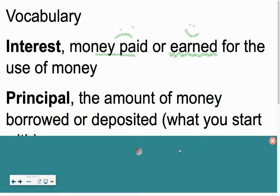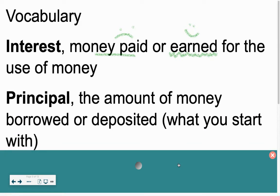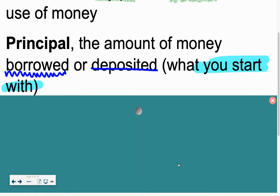Principal is the amount of money borrowed or deposited. The key phrase here is it's what you start with. So how much money did you put into the savings account or investment account? Or how much did you borrow to start on the loan for that car, technology, or house, whatever it might be?